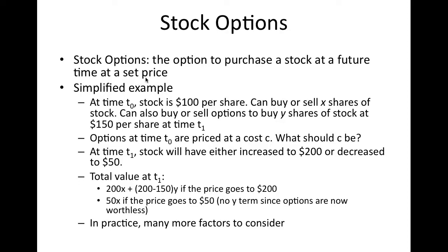To give a simplified example: at starting time t0, the price of the stock listed on the market is $100 a share. You can buy or sell X shares of that stock. You can also buy or sell options to buy Y shares of that same stock at $150 per share at a later time t1. The options at time t0, which is what we're interested in figuring out, have cost C. We don't know what the stock will be worth at time t1.